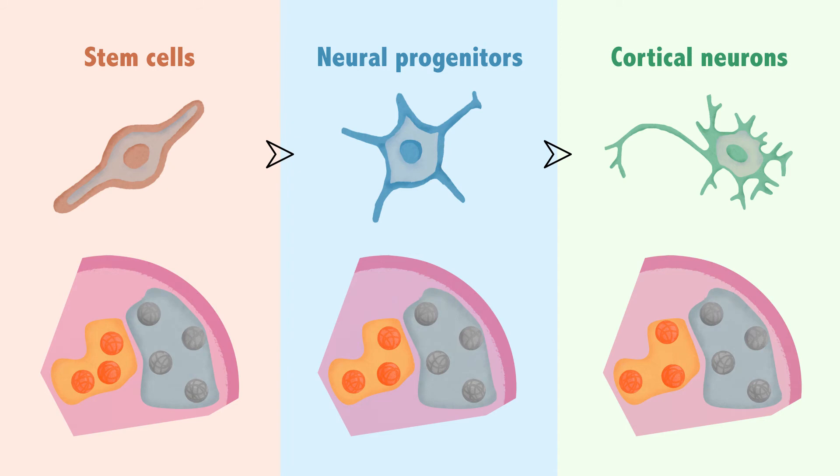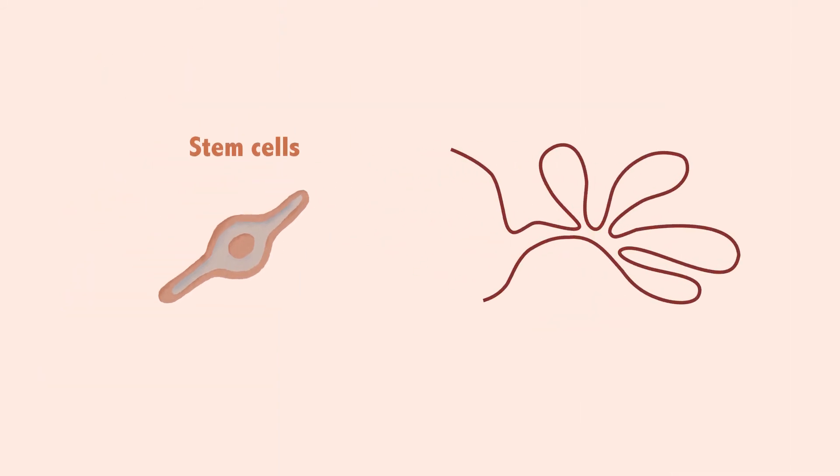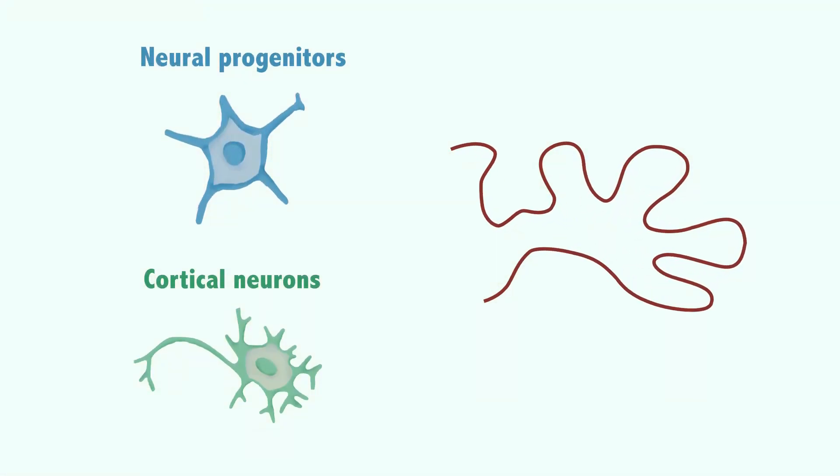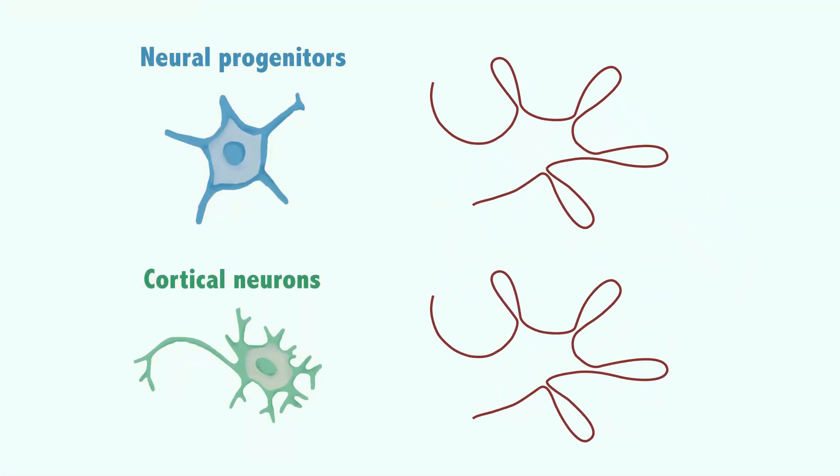An extensive polycomb network in stem cells is disrupted during neural differentiation, while dynamic interactions between neural transcription factor binding sites are established.